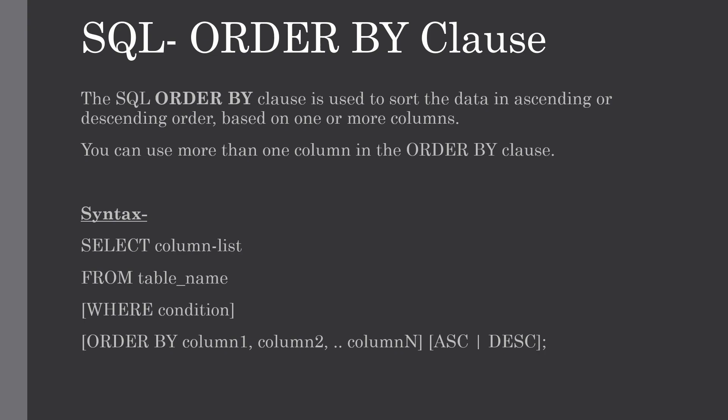By default we don't have to give ASC in the query. You can use more than one column in the ORDER BY clause — just make sure whatever column you're using to sort is present in the column list. This is the basic syntax of ORDER BY clause. Let me show you how to use it in different scenarios, in conjunction with WHERE condition and GROUP BY clause.